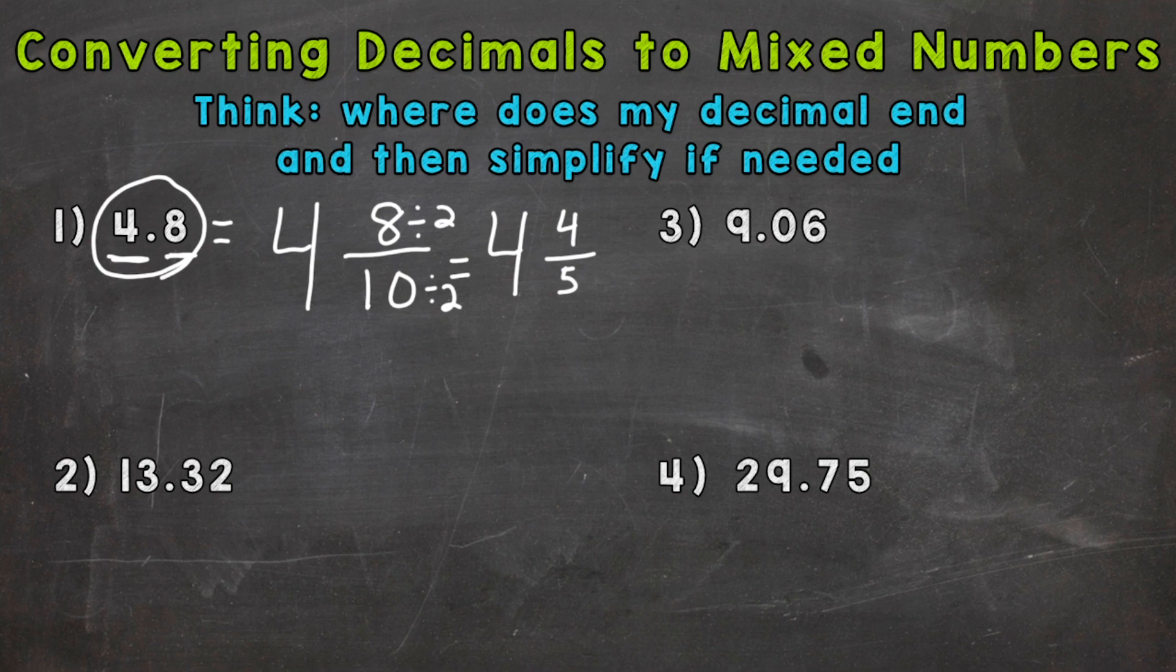You never simplify the whole number portion of the mixed number. That stays as is and we keep it as a four. So four and four fifths.